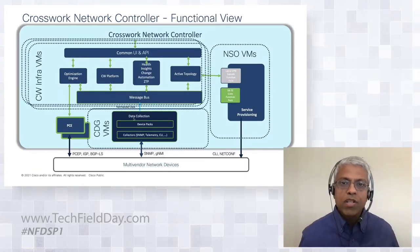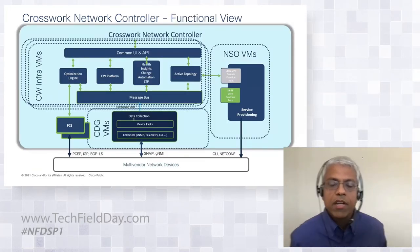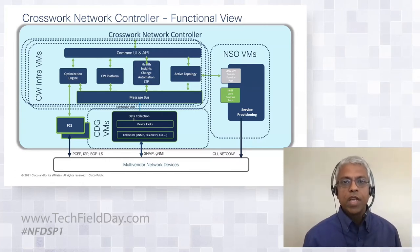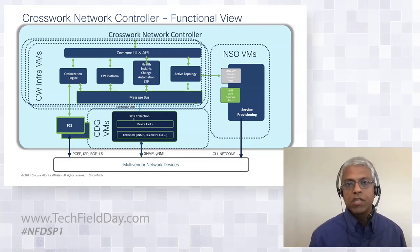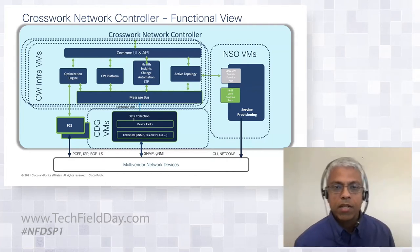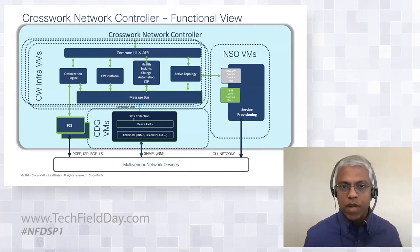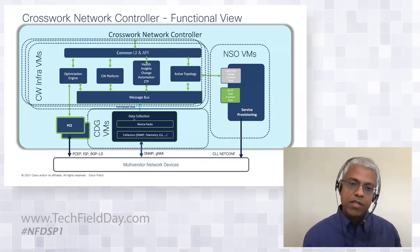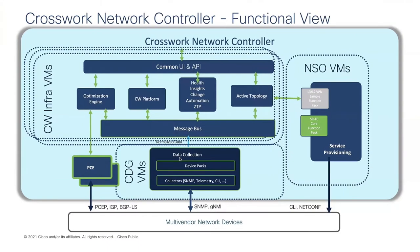So how does CNC do that? The key components of Crosswork Network Controller are shown in the blue box, while the network it's managing — your large-scale network of routers, potentially from multiple vendors — is the thin layer at the bottom. There are really three categories of communication between Crosswork and the routers, which we'll look at from right to left.